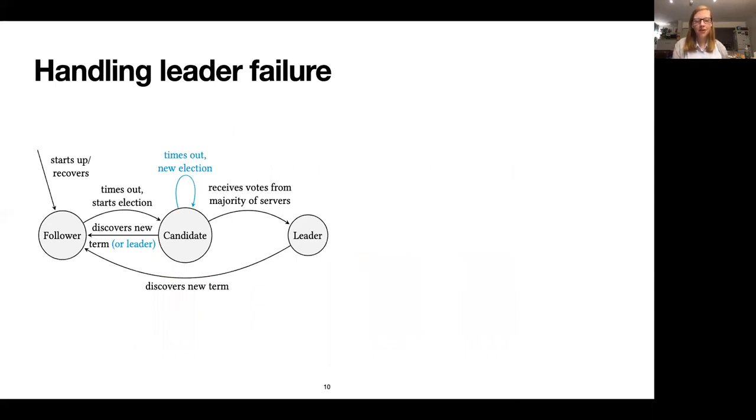While we would love to think that the system can carry on like this forever, eventually the leader is going to fail and is going to need to be replaced with another server. On this diagram we look at how this process goes ahead. Initially all the servers are in what's known as a follower state. These are basically passive servers. They sit there, they do what they're told, they're asked to replicate operations and they will do that happily.